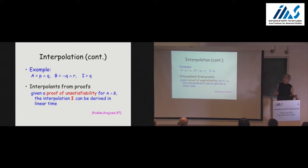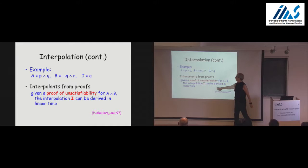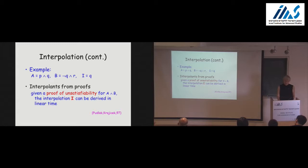By now there are many works on how to compute interpolation efficiently once we have two formulas that are unsatisfiable together. In principle, if we try to satisfy A and B and the SAT solver returns UNSAT, many current SAT solvers can efficiently compute an interpolant based on the proof of unsatisfiability. We can view this proof as a resolution proof and extract the interpolant from it. From a practical standpoint, it is important that it can be computed and that many current SAT solvers provide it.